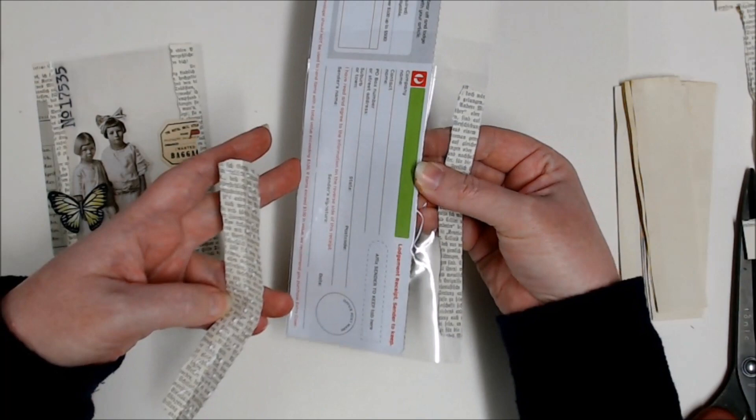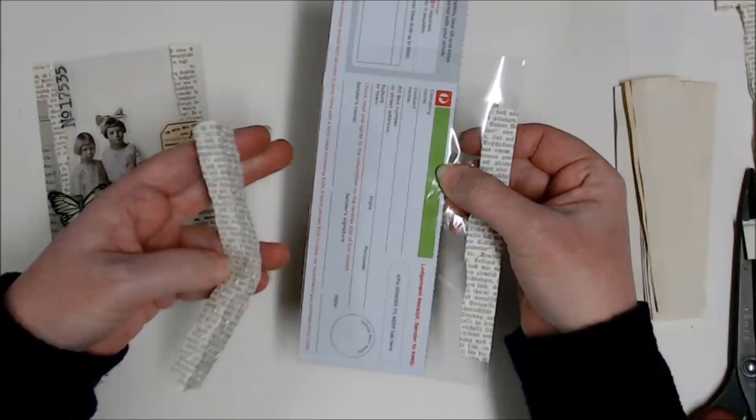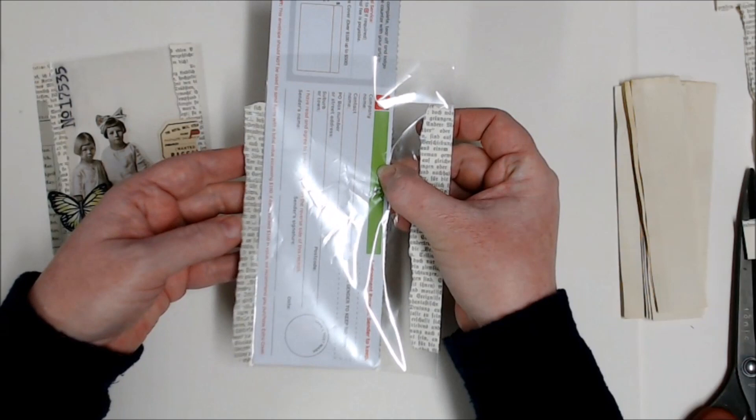So now I've got this edge that I want to glue and I'm pushing this cardboard insert flush up against that edge just to give it a bit more rigidity.